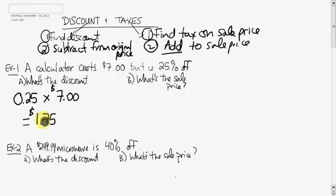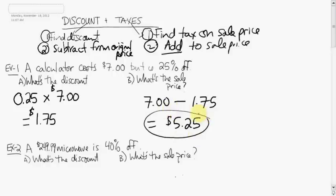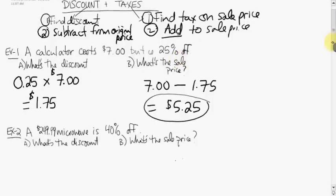So that's the discount. That's how much we're saving. So to get the sale price, all you got to do is take that $7, which was the original price, and subtract the $1.75. And when you subtract the two, you get $5.25. Go ahead and use a calculator, it doesn't matter to me. Okay, find the discount, subtract from the original price. We didn't talk about taxes here at all. If I don't mention it, don't worry about it.